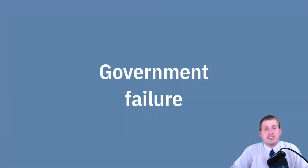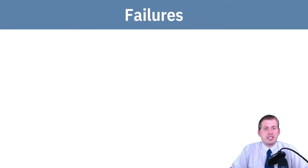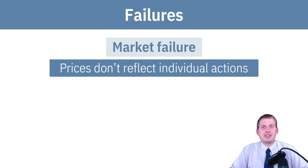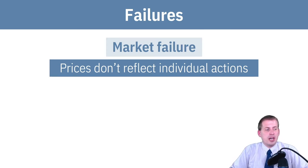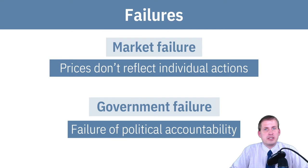The last thing we're going to talk about today is this idea of government failure. We've already talked about market failures — that's when prices get messed up, the signal of how to act in a market gets distorted, and people overpay or underpay, buy too much or too little. A government failure is slightly different: it's really just a failure of political accountability.